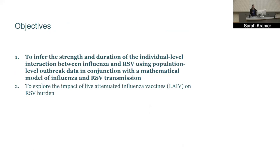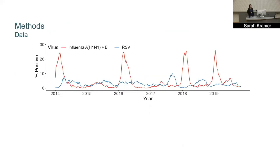For objective one, we need three components: data on influenza and RSV transmission, a model of their transmission, and a method to bring those together. We have six seasons of data from Hong Kong — both virological data (percent positive for influenza H1N1 and B in red and RSV in blue) and syndromic data. Despite Hong Kong's subtropical climate, H1N1 and B show a once-per-year seasonal pattern. We excluded H3N2 because it sometimes had multiple peaks per year, making it much more complicated to model.